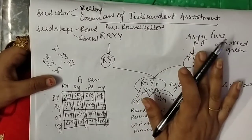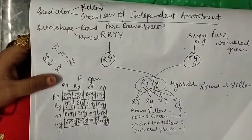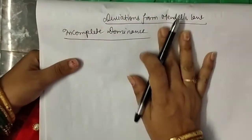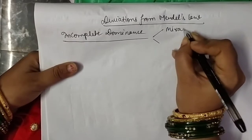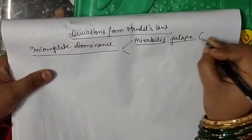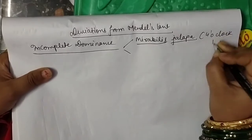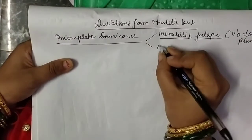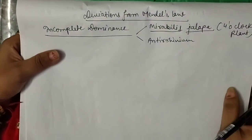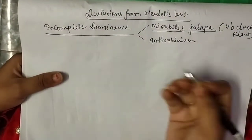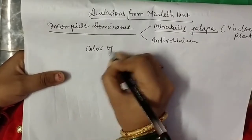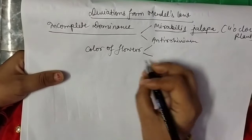We have now completed the three laws of Mendel. Now I am going to discuss the deviations from Mendel's law. The first deviation is incomplete dominance, in which we take the example of the plant Mirabilis jalapa, also known as the 4 o'clock plant, and Antirrhinum, which is known as the snapdragon or brock flower. We are taking examples from two flowering plants.